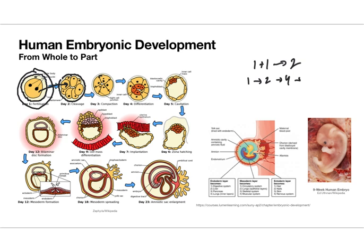Towards the end of the first week, around day four or five, this ball of cells begins to differentiate into two types: an inner cell mass and an outer layer of cells. The inner cell mass will form the future body of the embryo, while the outer layer, the trophoblast, will form the supporting tissues — the chorion, placenta, and so forth. This has not grown in size at all from the original size of the zygote.